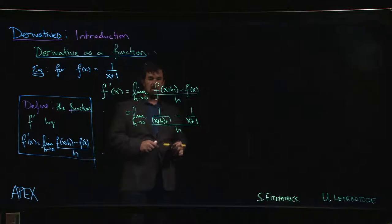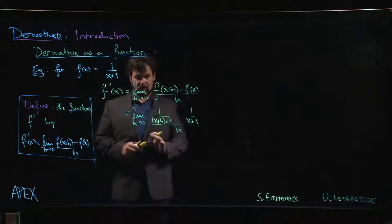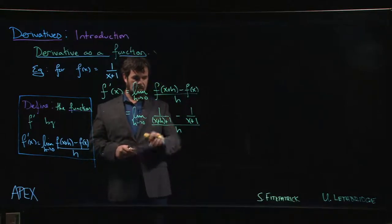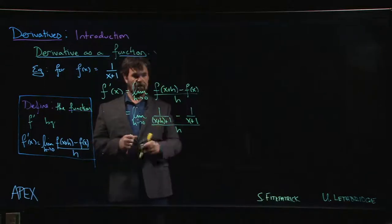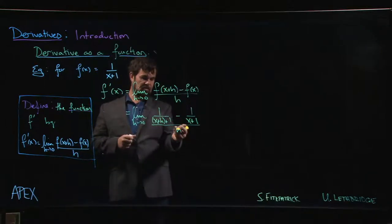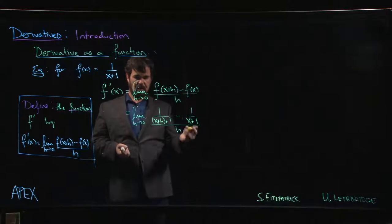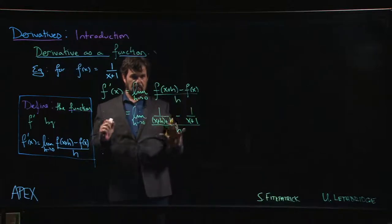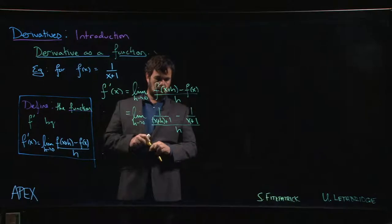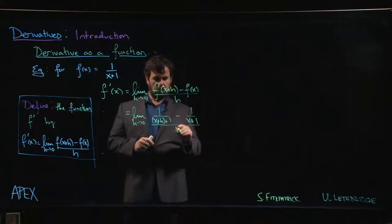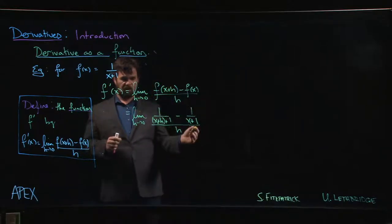One of the things that makes this tricky is you've got this compound fraction. The numerator is a difference of two fractions and then we have this additional denominator, this h. A lot of people are going to get themselves mixed up. Where does that h go? If we're going to simplify things, where does that h belong?